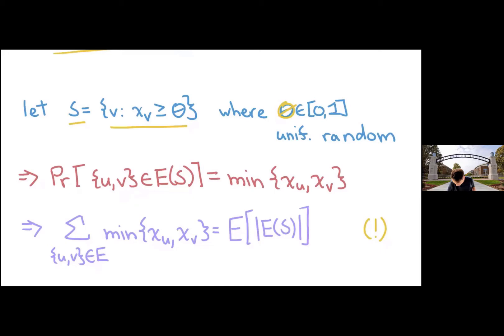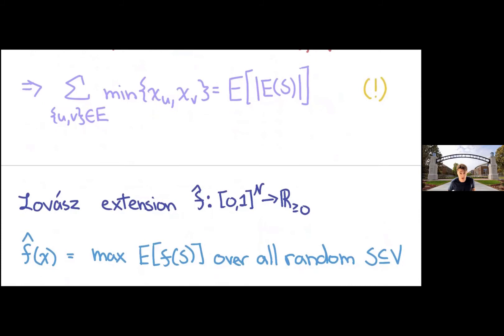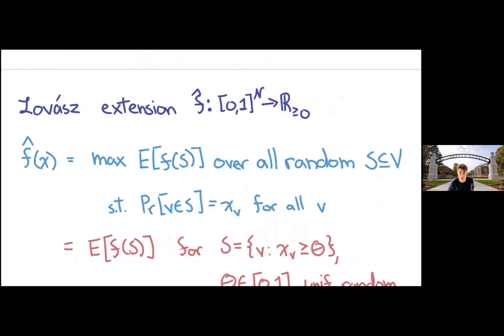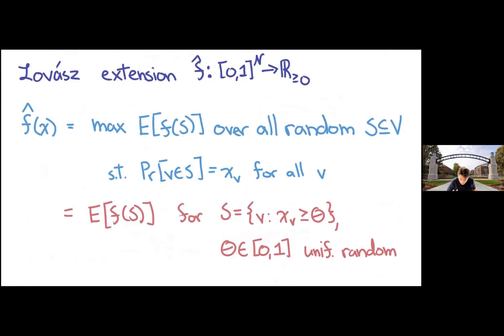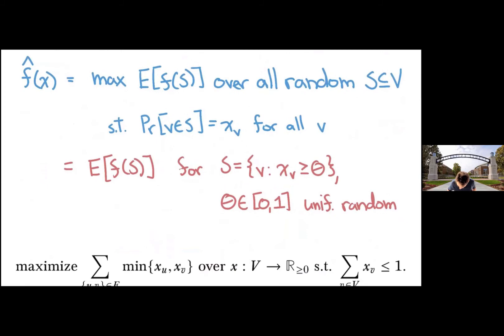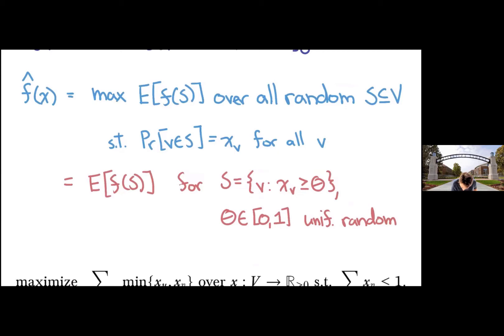So that brings us to the Lovász extension. I think establishing this connection was a big step for us. So the Lovász extension, I want to take my set function S and extend it to zero one to the V. And for supermodular S in particular, it'll be the expected value of F of S for precisely that set S just described.